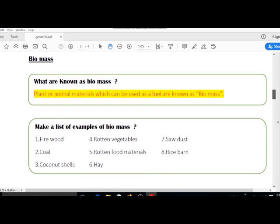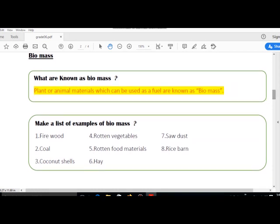Biomass: What are known as biomass? Plants and animal materials which can be used as fuel are known as biomass.